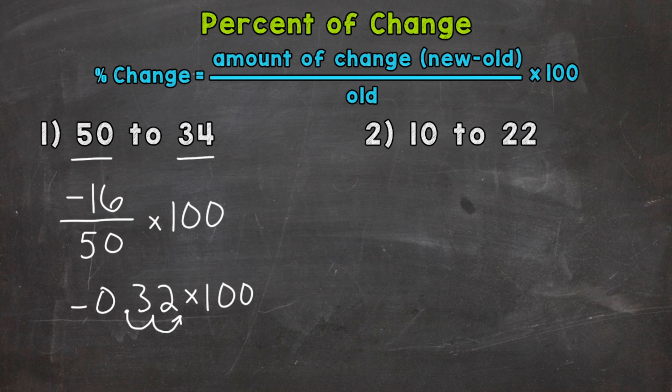And we end up with a negative 32 percent. So we can express that answer in two ways. Just like what we wrote, negative 32 percent. And that negative shows us that we had a decrease. So this would be one way.